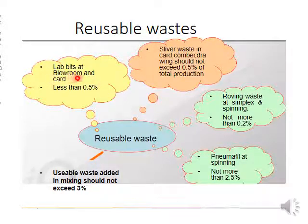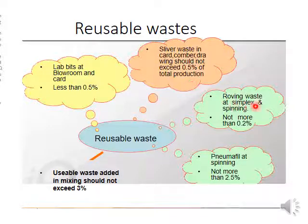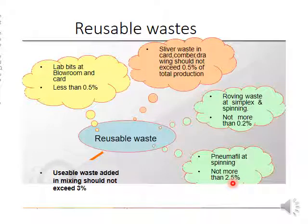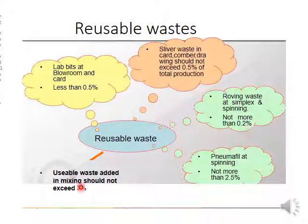Lap bits at blow room and carding should be less than 0.5 percent. Sliver waste at carding, comber, and draw frame should not exceed 0.5 percent of total production. Roving waste at simplex and spinning should not be more than 0.2 percent. Pneumafil waste at spinning should not be more than 2.5 percent — this depends entirely on the breakage rate at the ring frame. Adding these up gives approximately 3.2 percent, so total reusable waste in the mixing should not exceed 3 percent.